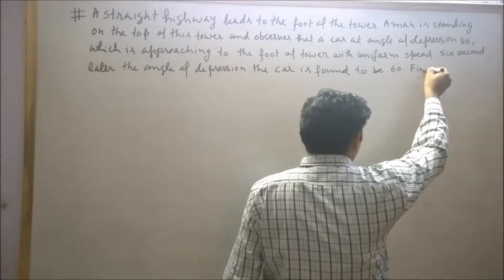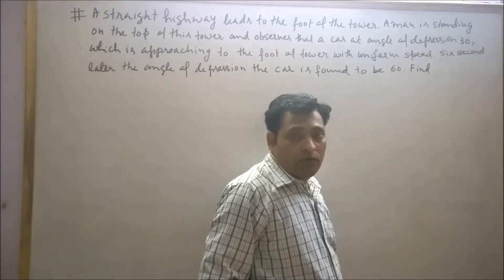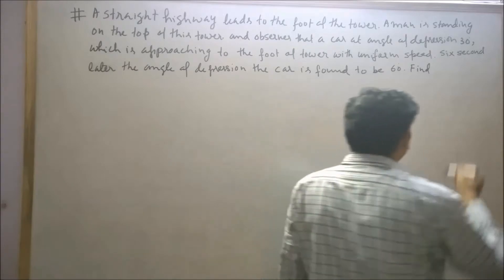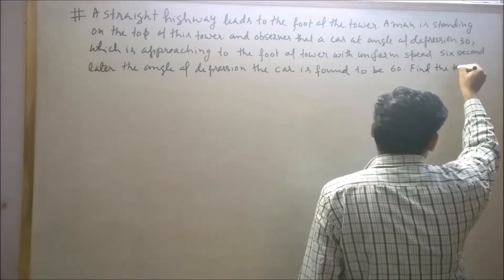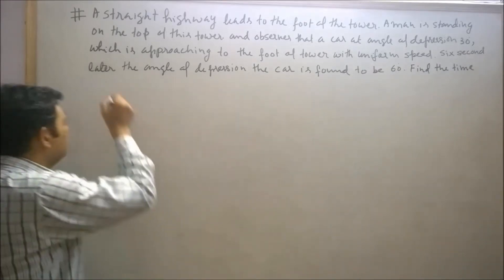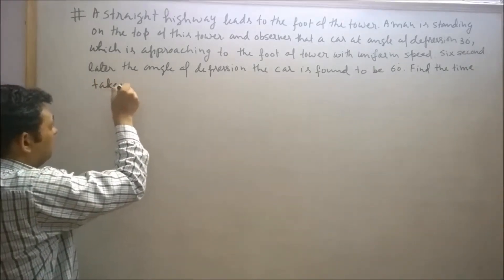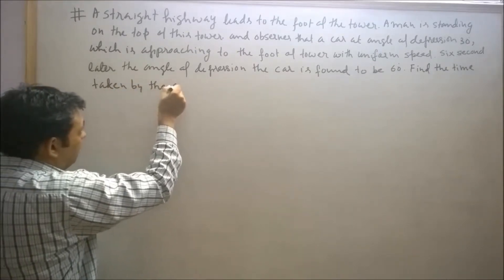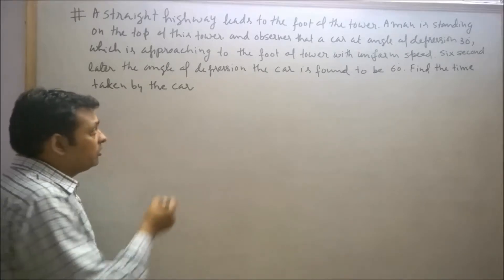This car is approaching the foot of the tower with uniform speed, and 6 seconds later the angle of depression of the car is found to be 60 degrees. We need to find the time taken by the car to reach the foot of the tower from this point.